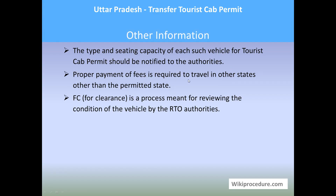Other information: the type and seating capacity of each vehicle for tourist cab permit should be notified to the authorities. Proper payment of fees is required to travel in states other than the permitted ones. FC clearance is a process for reviewing the condition of the vehicle by the RTO authorities. Thank you for visiting wikiprocedure.com to learn how to transfer tourist cab permit in Uttar Pradesh — please give a like and subscribe for more videos.